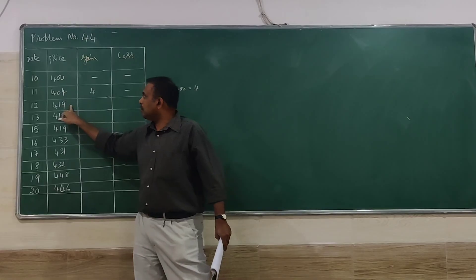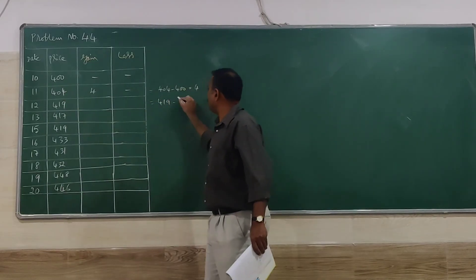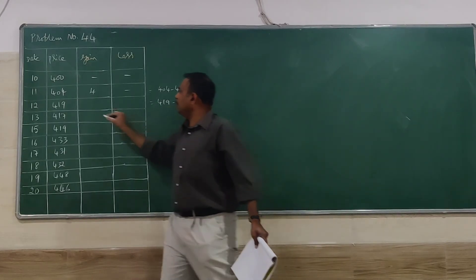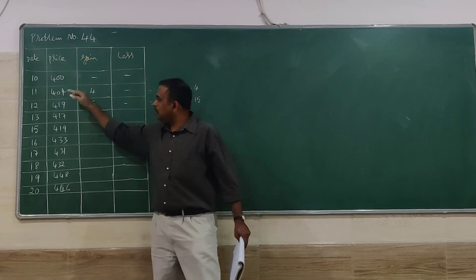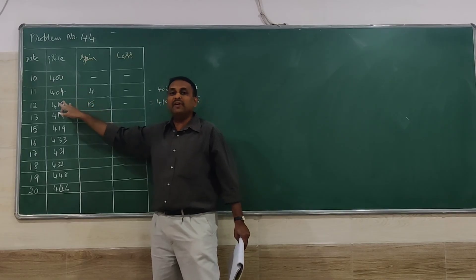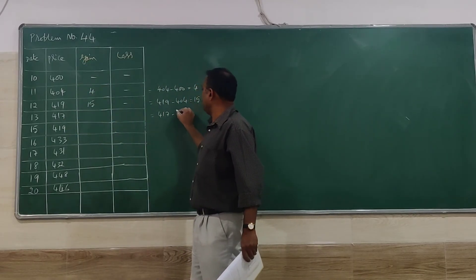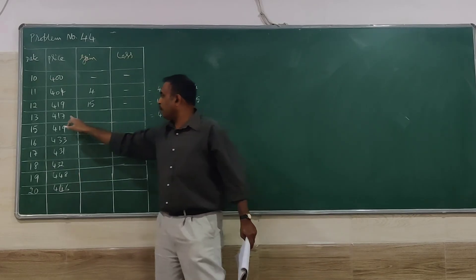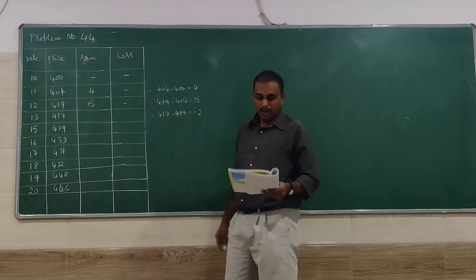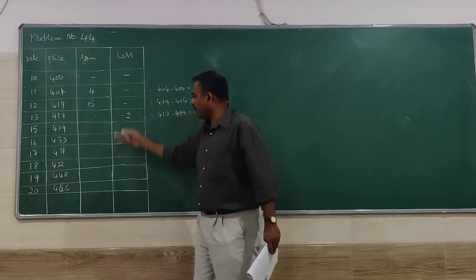On the 12th day the price is 419 and on the 11th day it was 404, so 419 minus 404 gives plus 15 — that is a gain. On the 13th day the price is 417 compared to 419 on the 12th day, giving 417 minus 419 equals minus 2. So minus 2 is a loss. Like that, we have to find gain or loss for all the days.